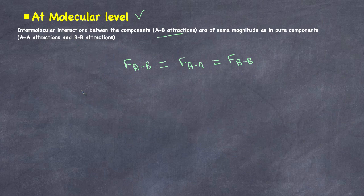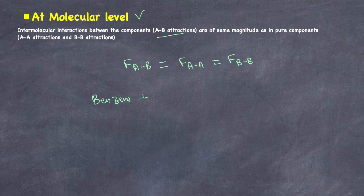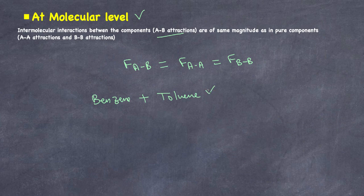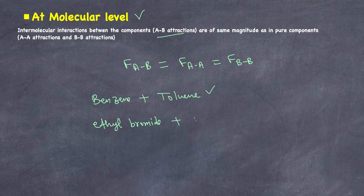Examples of ideal solutions include benzene mixed with toluene, which is the most commonly used example. Another example is ethyl bromide and ethyl chloride.